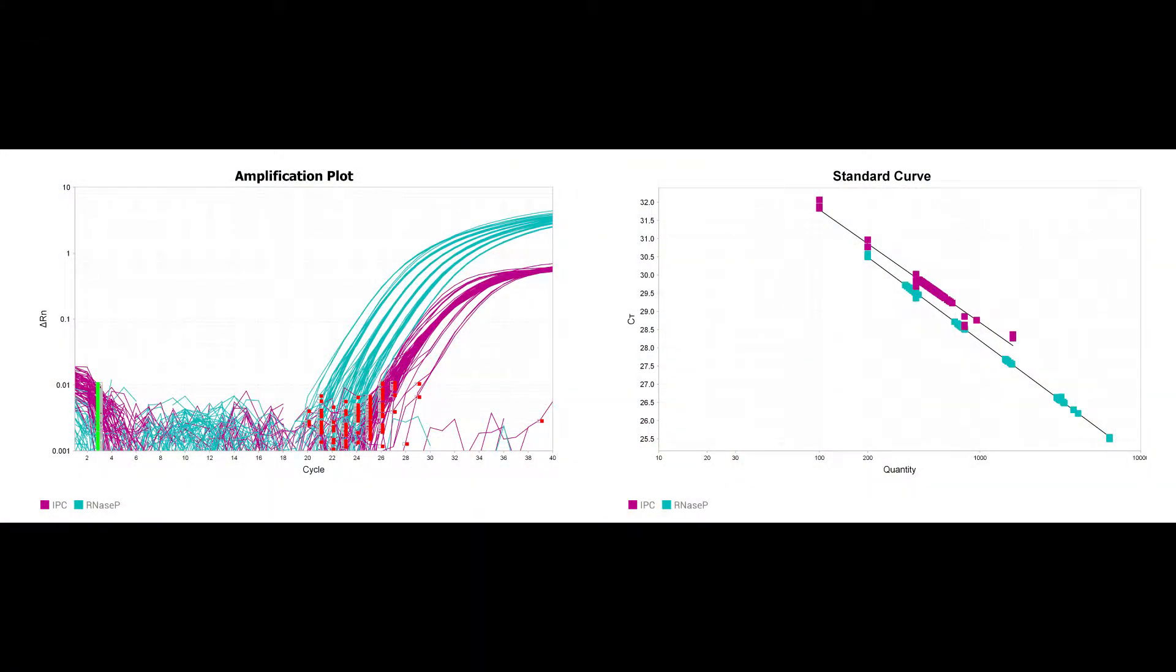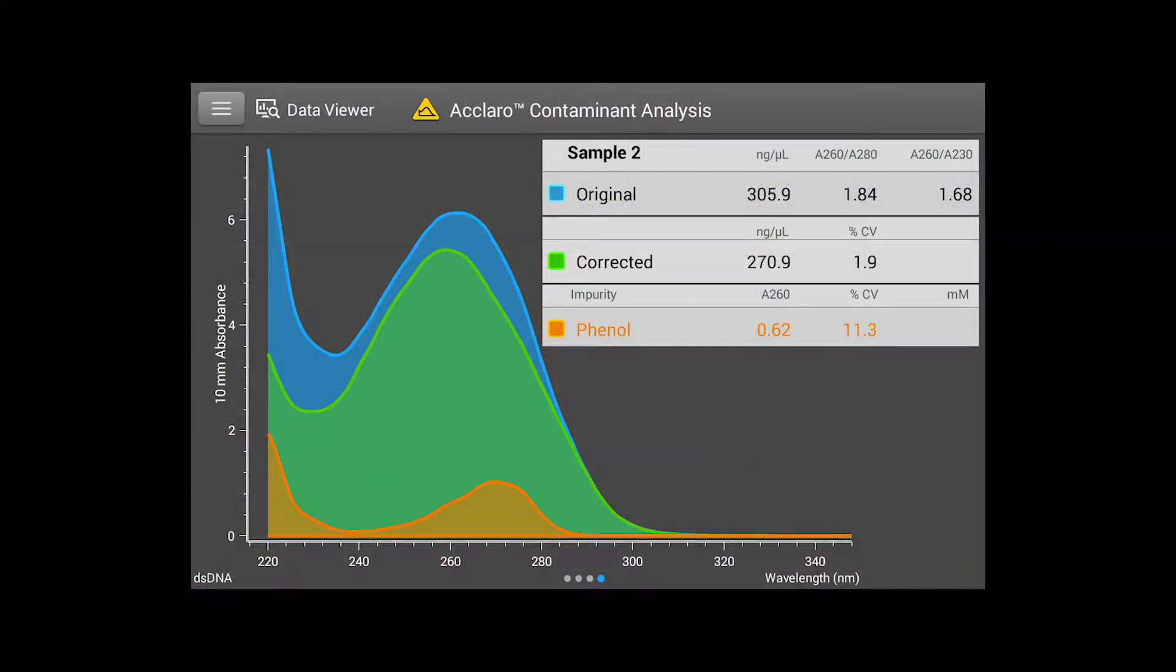An absolute quantification qPCR experiment utilizes a standard curve of known template quantities to determine unknown sample gene copy number. This qPCR method requires the concentrations of the standard are determined reliably. Samples should also be free from nucleic acid and organic contamination. Inaccurate standard quantification produces false gene copy number calls.